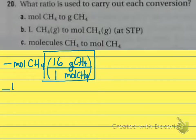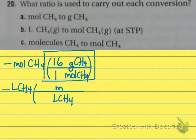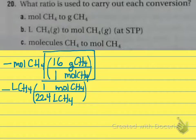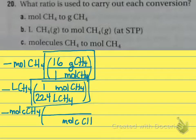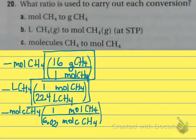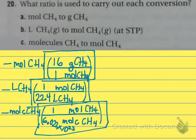Letter B: some liters of methane. Liters of methane would go on the bottom, and moles of methane would go on the top. One mole is 22.4 liters. Letter C: some number of molecules of methane to moles. This is your Avogadro's number or count conversion factor. One mole is 6.022 times 10 to the 23rd. That's the specific conversion factor written that way because you have to make sure your units are crossing out.